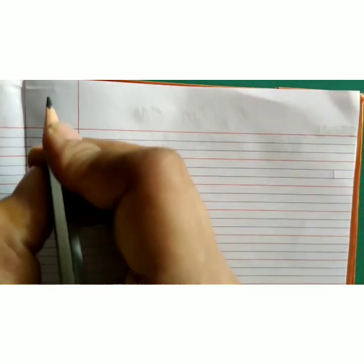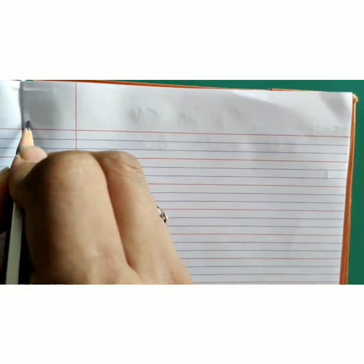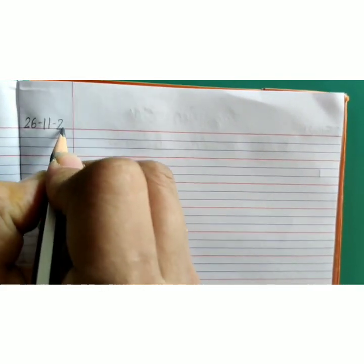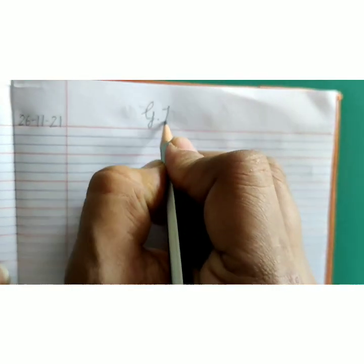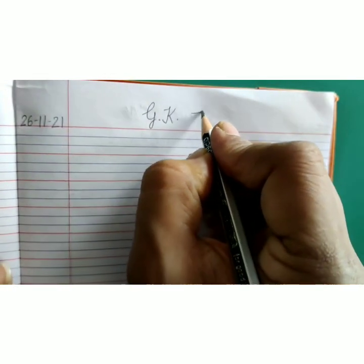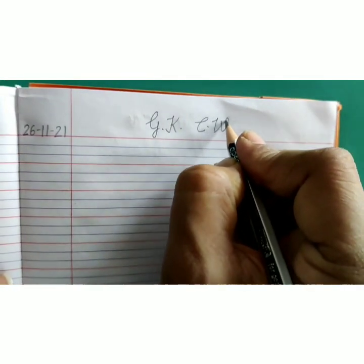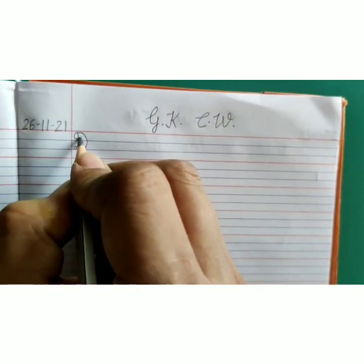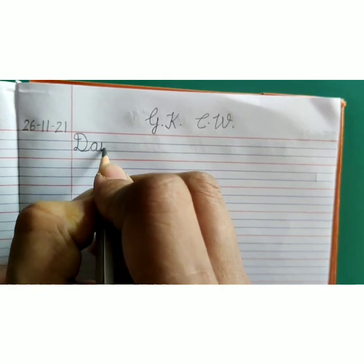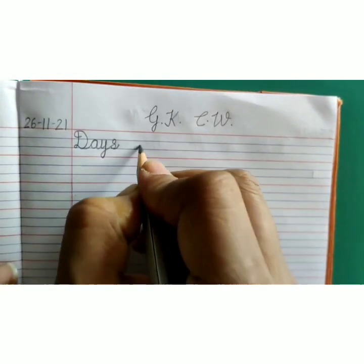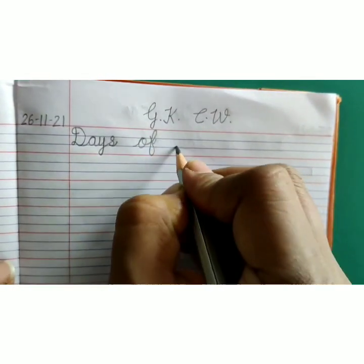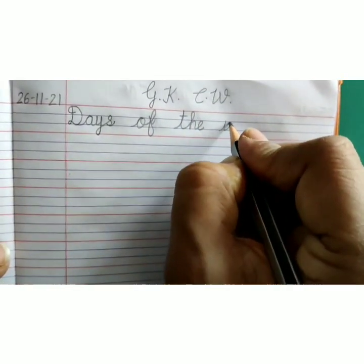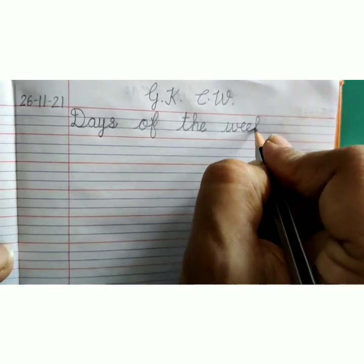Today's classwork is days of the week. Open your notebook and write down today's date, 26-11-21. At the top write down capital G dot capital K, one finger space capital C dot capital W. General knowledge classwork. Near the margin write down heading capital D-A-Y-S, days, O-F of T-H-E, the, W-E-E-K, week, days of the week.